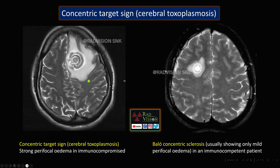Next: what is the concentric target sign? Here you can see there are concentric rims of membranes which typically mimic the concentric target appearance, classically seen in cerebral toxoplasmosis with significant perilesional edema. However, a similar concentric appearance is also seen in Balo's concentric sclerosis, which is typically seen in immunocompetent patients with mild perifocal edema. In cerebral toxoplasmosis, the concentric target sign is seen with significant perifocal edema and is commonly found in immunocompromised patients.